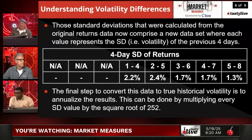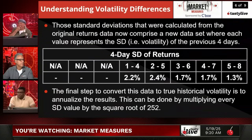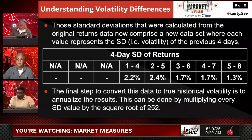The next step is to convert those standard deviations into volatility, which will be annualized. You have to use the square root of trading days, which is 250 to 252 days — not calendar days, trading days. That's how we get the historical volatility number.